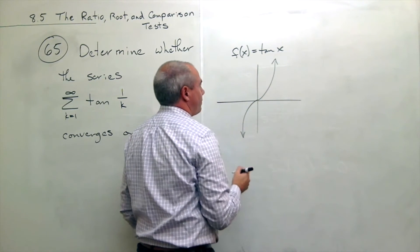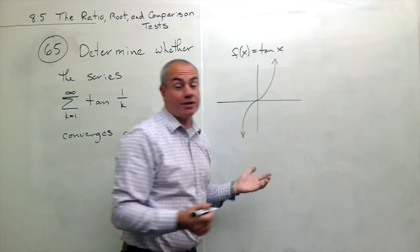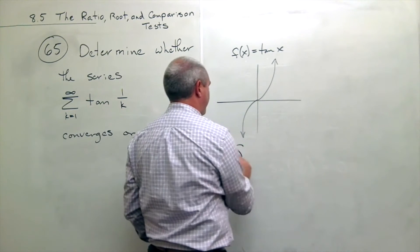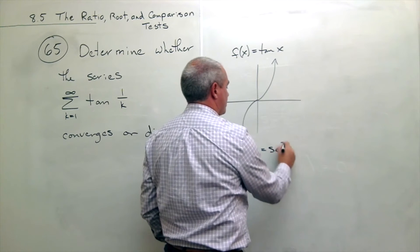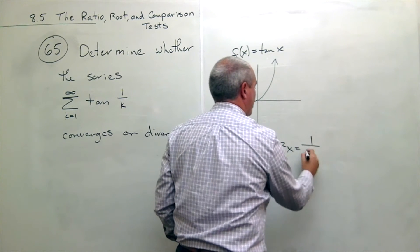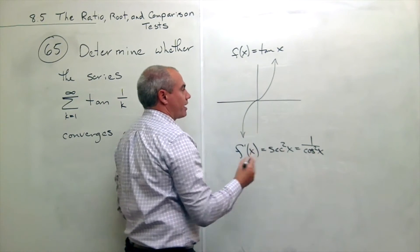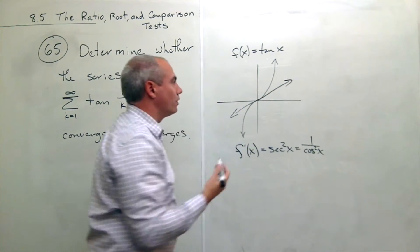It looks something like this. And it just so happens that the slope of this function, we could figure it out by taking a derivative and plugging in zero. f prime of x is equal to secant squared of x, which is one over cosine squared of x. And if I plug in zero for this thing, I get one. So the slope here at zero is one.